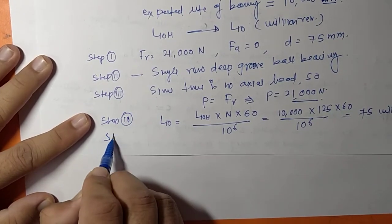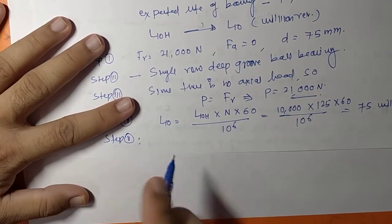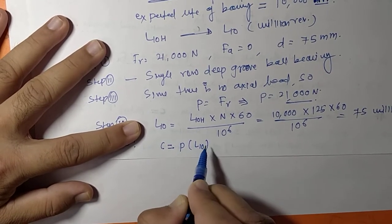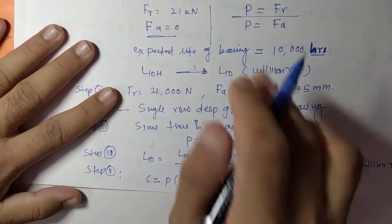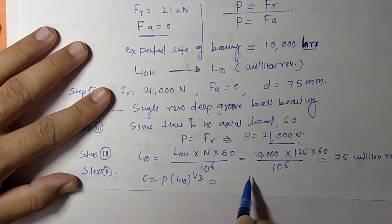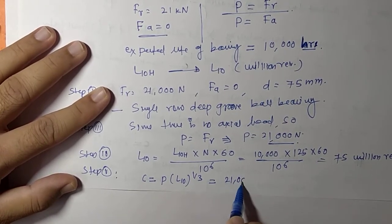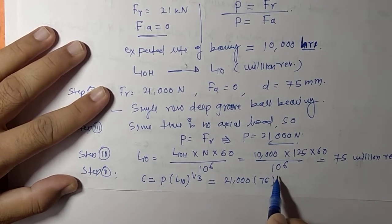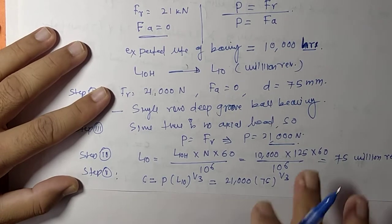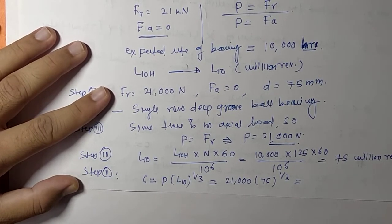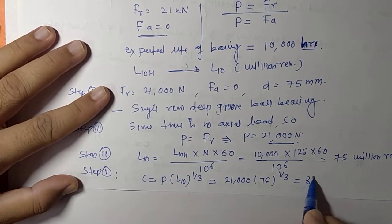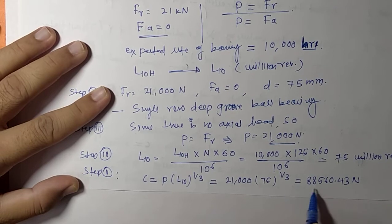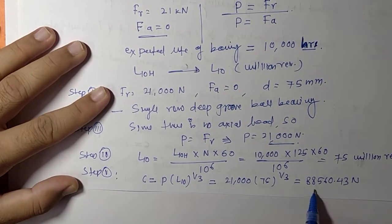Substituting values: C = 21,000 × (75)^(1/3). On calculation, C = 88,560.43 N. This is the required dynamic load capacity for this particular bearing selection.